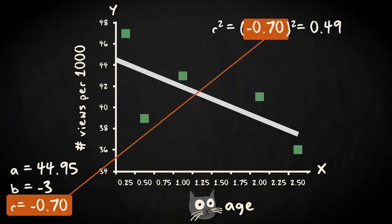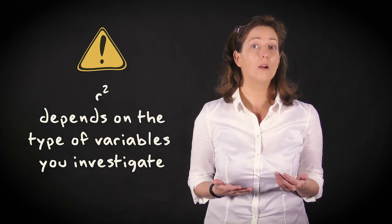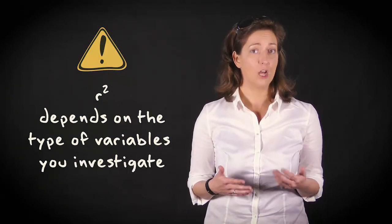In our example, the value of r squared is 0.49, which is a pretty high value for these types of variables. In the behavioral and social sciences, relationships between variables are often complicated and influenced by many other factors. This is why, with real data, we're generally already very happy with r squared values of 0.25. But you should remember that the value of r squared really depends on the type of variables you're investigating. In some cognition, medical, or biological research fields, you might see much higher values.